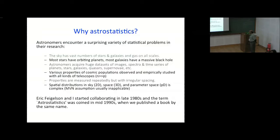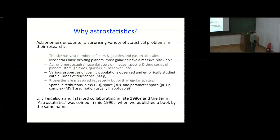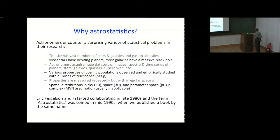There is quite a bit of spatial data in 2D, 3D, and also multi-dimensional parameter spaces. Usually in statistics we often assume multivariate normality, which doesn't hold in many cases. Eric and I started this enterprise about 25 years ago and we wrote a book with the name astrostatistics, coining that term in the 90s.